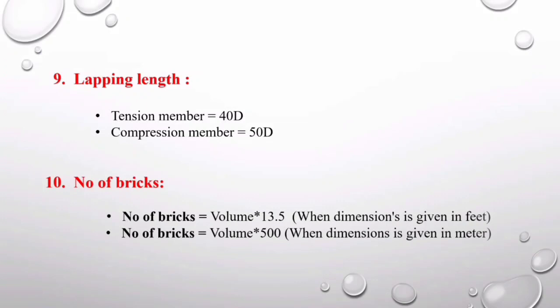The last formula is for finding the number of bricks. Multiply volume by 13.5 when volume is given in cubic feet, or multiply by 500 when volume is given in cubic meters. This is because one cubic foot of brickwork equals 13.5 bricks, and one cubic meter equals 500 bricks.